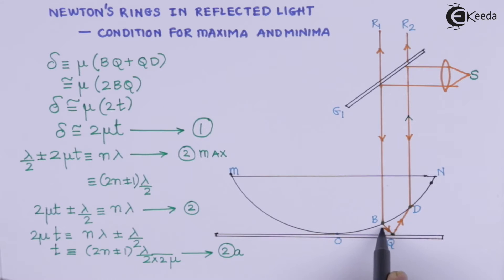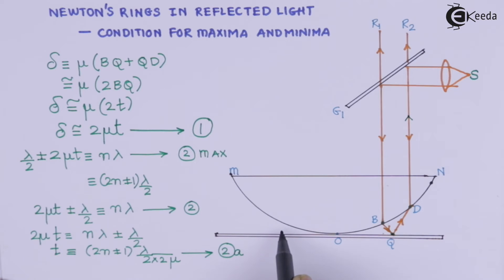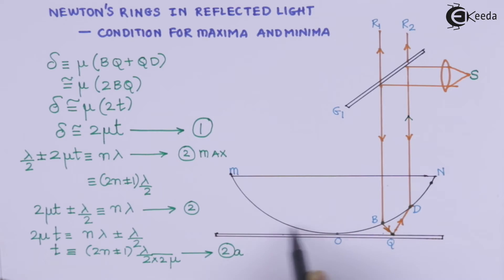Now let us consider why the fringes are circular. At a given thickness, symmetrically opposite to any point there is going to be another point with the same thickness, because this geometry is a circle. This means for each thickness, there is a set of points lying on circular loci — and that is why we have circular fringes.